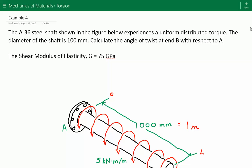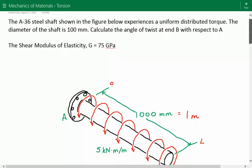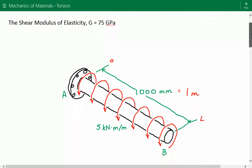The diameter of the shaft is 100 millimeters. We need to calculate the angle of twist at end B with respect to A. The shear modulus of elasticity G for A-36 steel is 75 gigapascals.